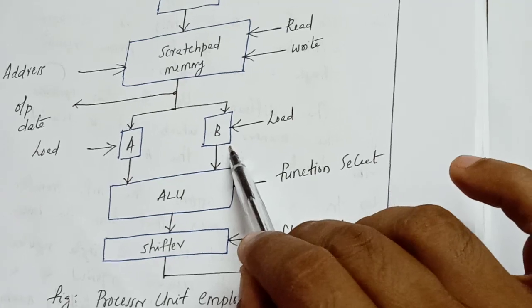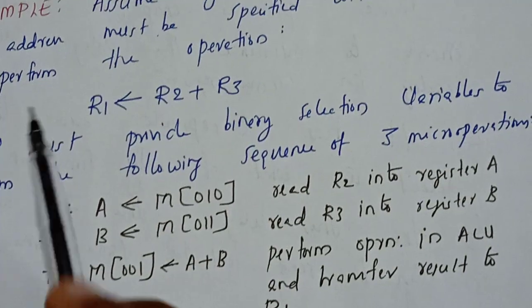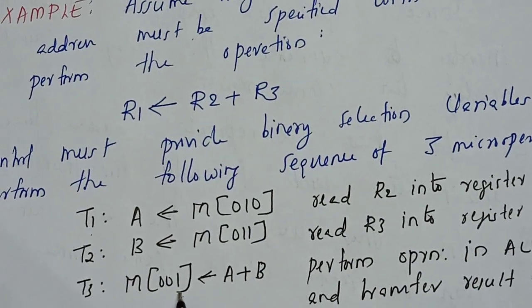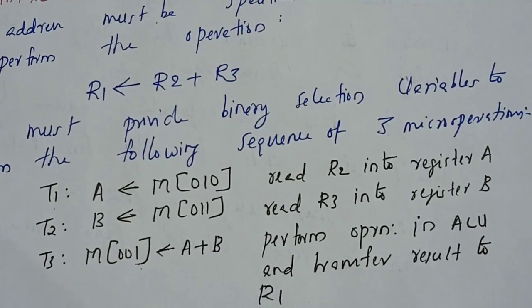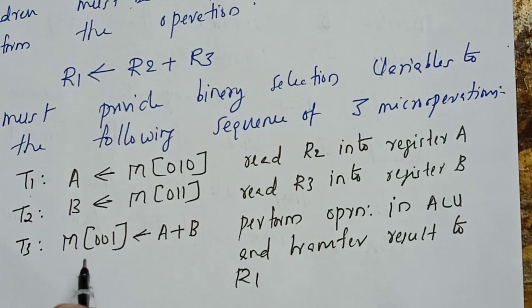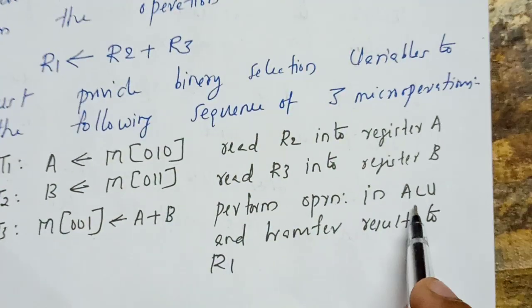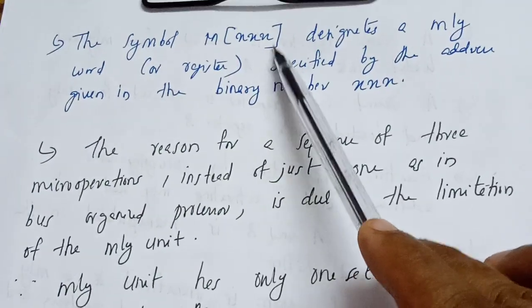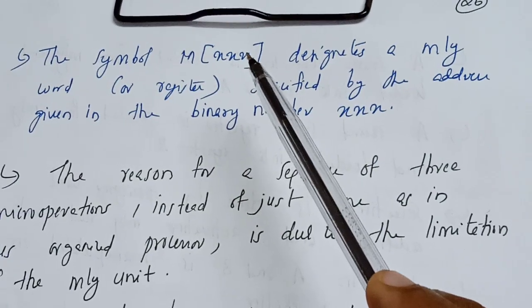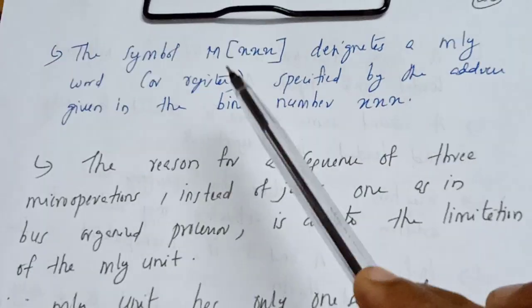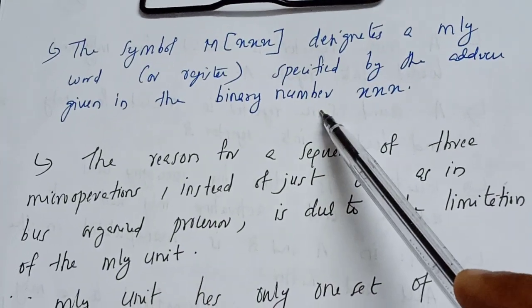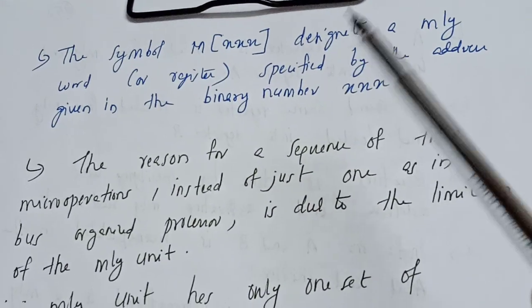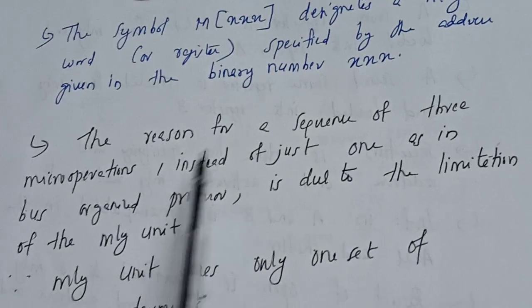The destination register r1 has another address, so at t3, memory address 001 (which is the address of r1) stores the result of adding A and B — performing the ALU operation and transferring the result to r1. The notation M[xxx] designates a memory word or register specified by the address given as a binary number. So M[001], M[010], M[011] each specifies a particular memory word or register.